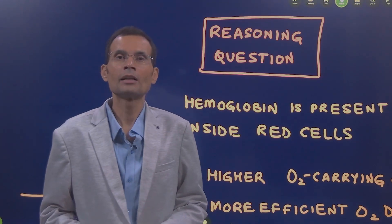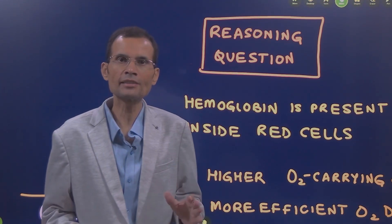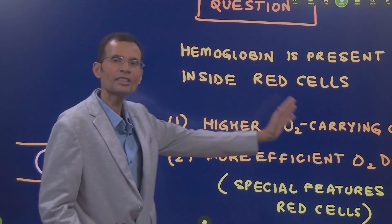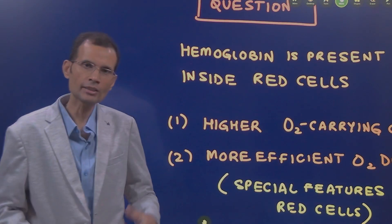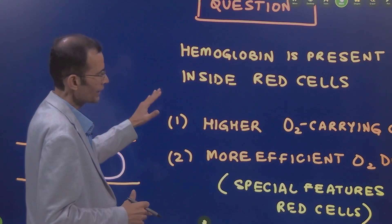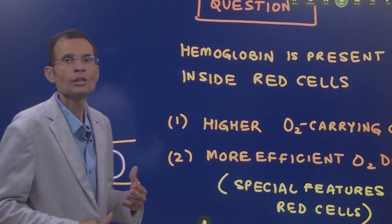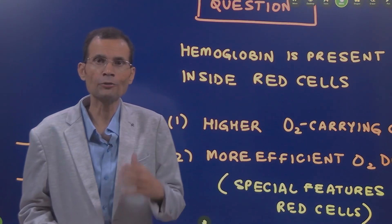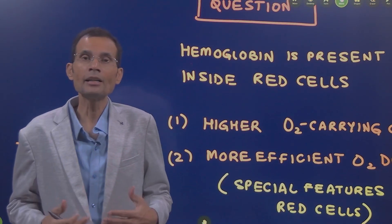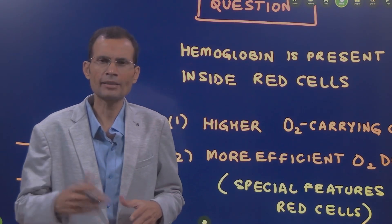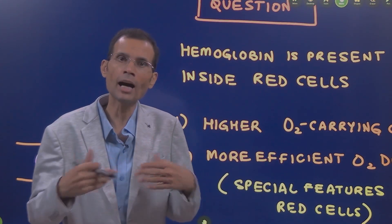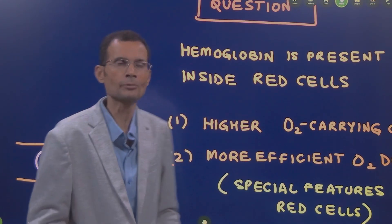Hello friends, let us see another reasoning question. Hemoglobin is present inside the red cells, inside the RBCs. Explain why. This explanation will cover the advantages of hemoglobin being inside the RBCs, and the potential hazards if hemoglobin were to be outside the RBCs, free in the plasma.